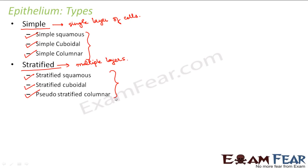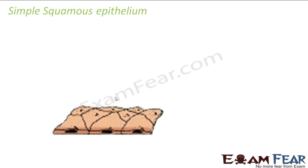Now we will discuss each of them in detail one by one. I am not discussing all of them at once because that will create confusion. We will start with the first one — simple squamous epithelium. One interesting thing to note is that each type of epithelium is present in specific places, and we will come to know why a particular type is present in a particular location.